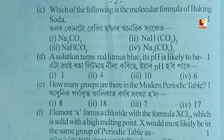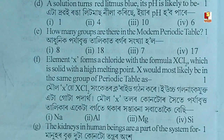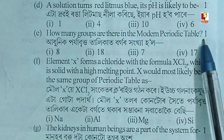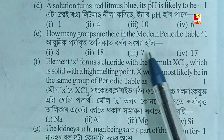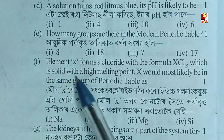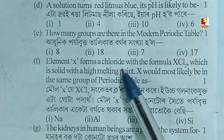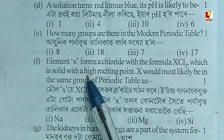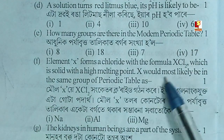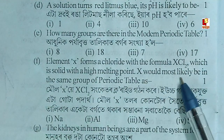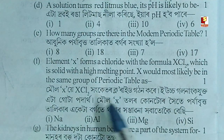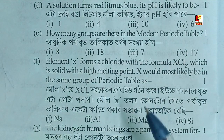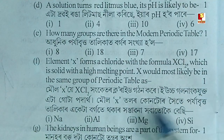How many groups are there in the modern periodic table? Element X forms a chloride with the formula XCl2, which is solid with a high melting point. X would most likely be in the same group of the periodic table as...